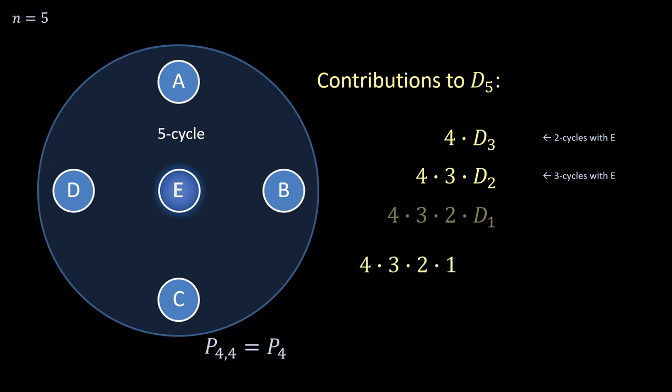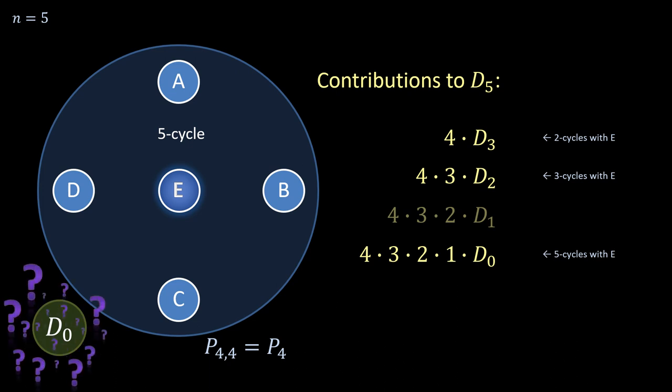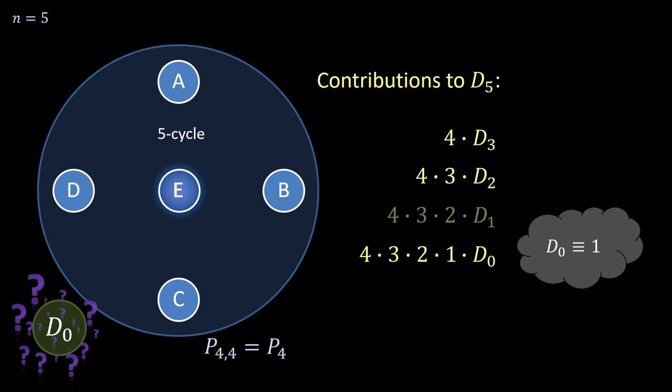Again, we can formally add a factor D_0, which now stands for the number of derangements in an empty set. A seemingly absurd proposition, but by defining D_0 equals one, the formalism remains logically consistent.